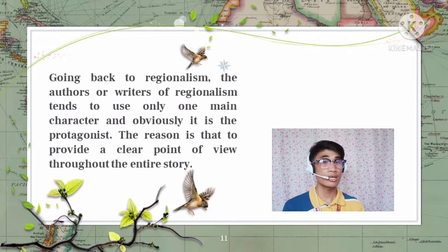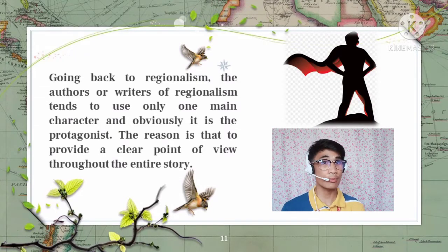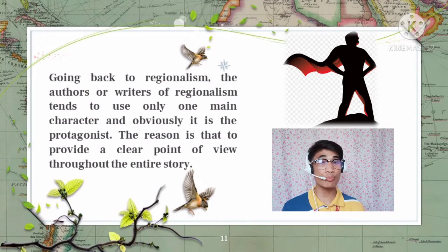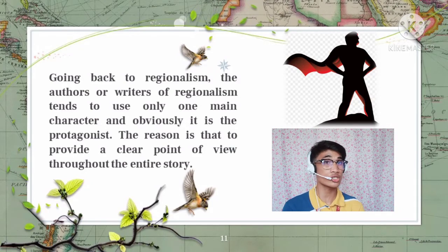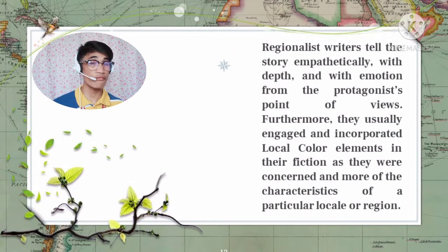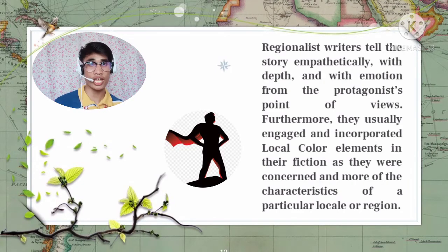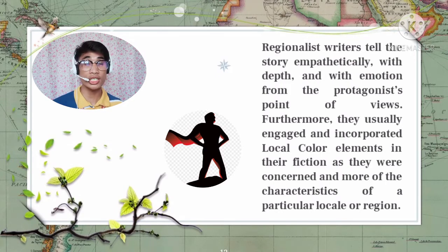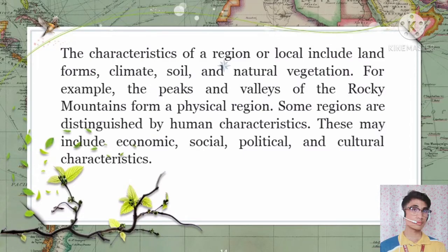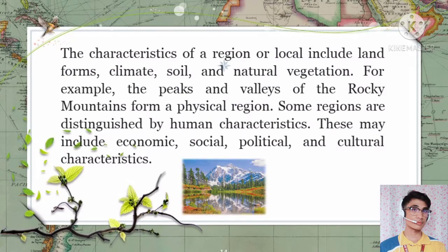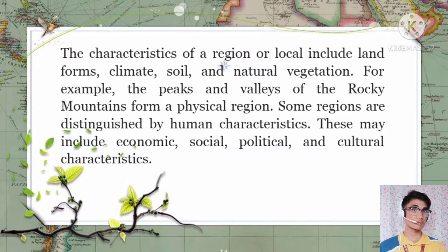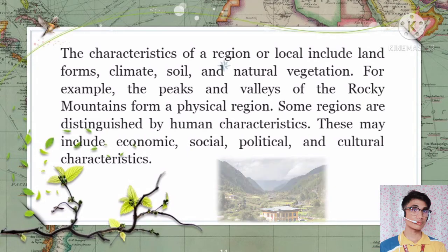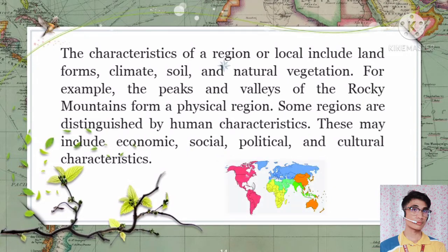Going back to regionalism, authors of regionalism tend to use only one main character — the protagonist — to provide a clear point of view throughout the entire story. Regionalist writers tell the story empathetically with depth and emotions from the protagonist's point of view, and they usually incorporate local color elements as they focus on the characteristics of a particular place or region. The characteristics of a region include landforms, climate, soil, and natural vegetation — for example, the peaks and valleys of the Rocky Mountains form a physical region.